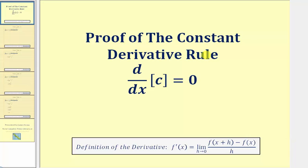Welcome to a proof of the constant derivative rule, which is the derivative of a constant c with respect to x equals zero. We'll be using the definition of the derivative given here below, where f prime of x equals the limit as h approaches zero of the difference quotient.